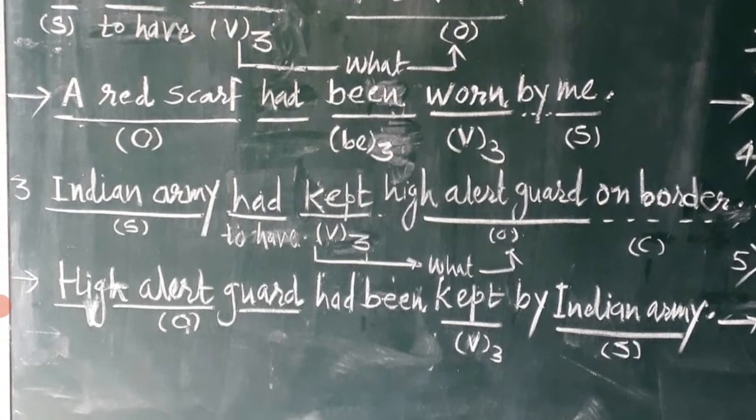Third sentence: 'Indian army had kept high alert guard on border.' Again, the subject is 'Indian army,' 'had' is the representative of 'to have' for past perfect, then the action verb in its past participle form — keep, kept. Later on, the question 'what' is asked and its answer is 'high alert guard.' 'On border' is a complement of this sentence. 'High alert guard' as an object is placed in place of 'Indian army.'